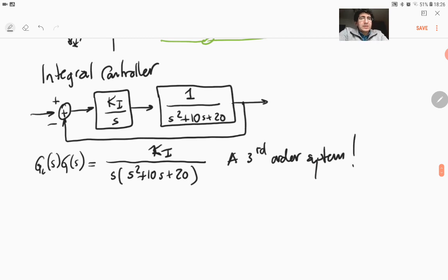So we cannot trivially talk about what's going to be the transient response, but at least we know that system is now type 1.